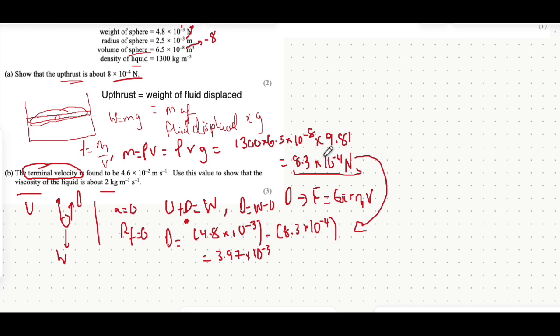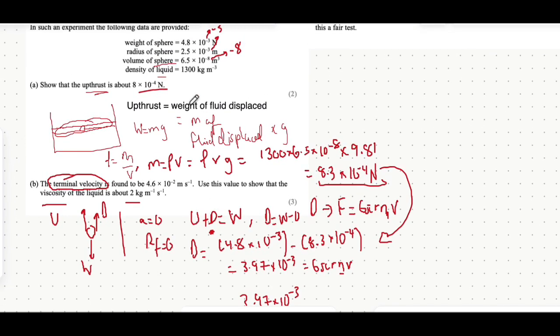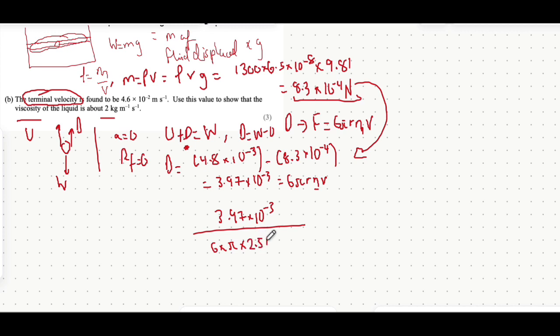The drag force equals 6 times pi times radius times viscosity times velocity. What you would now find is the viscosity by dividing both sides by 6 pi rv. So 3.97 times 10 to the minus 3 divided by 6 times pi times the radius, which is 2.5 times 10 to the minus 3, multiplied by the velocity, 4.6 times 10 to the minus 2.